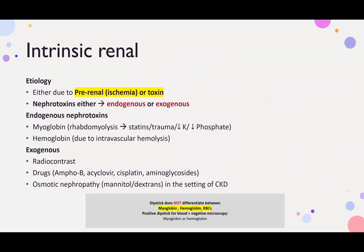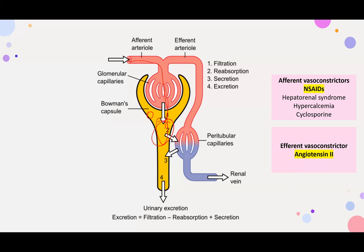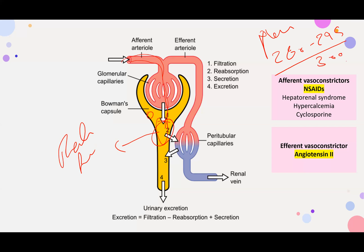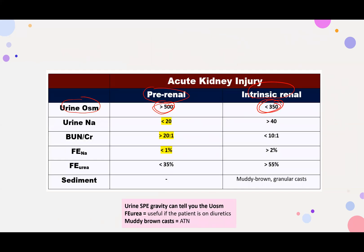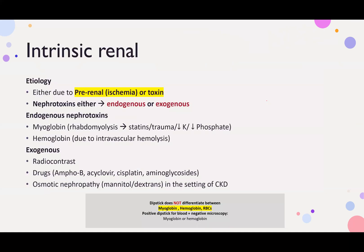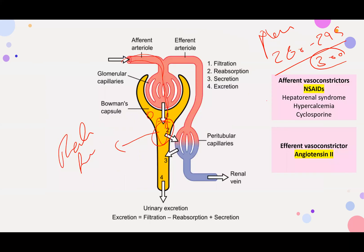With intrinsic renal, the tubules are dying and cannot reabsorb fluid, so the urine becomes dilute. Plasma osmolality is 280–295 (roughly 300). Since the kidneys are not reabsorbing, the urine osmolality equals plasma osmolality — around 300 — because the tubules are dysfunctional.